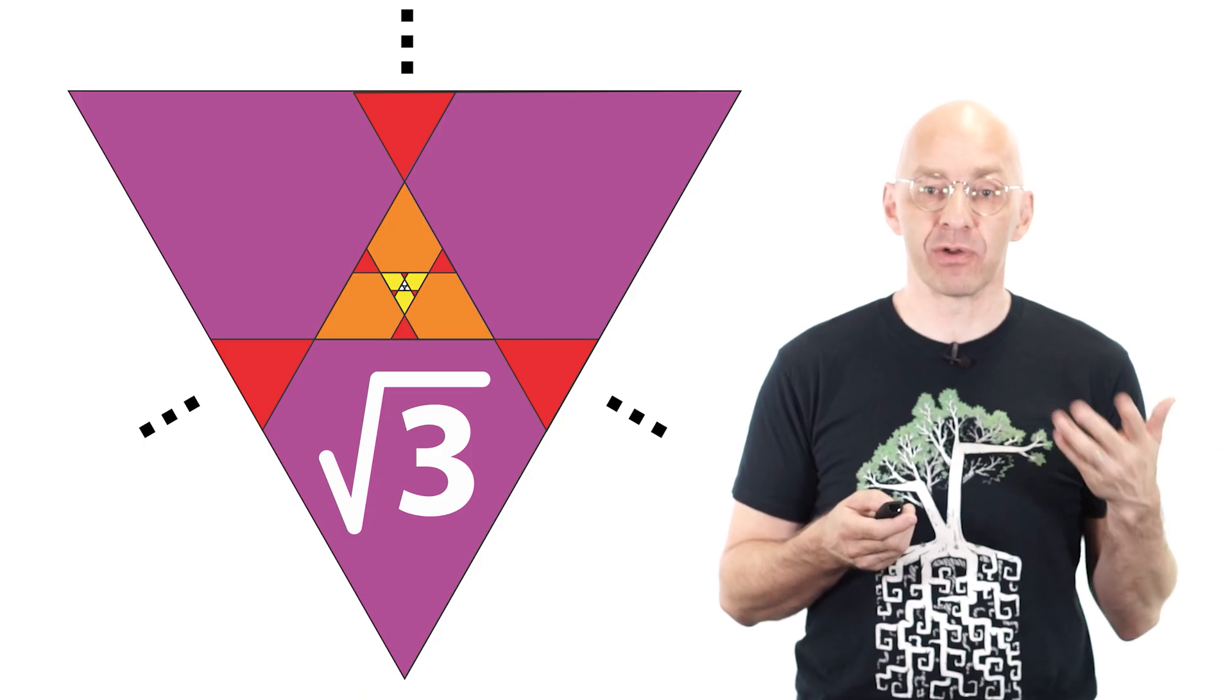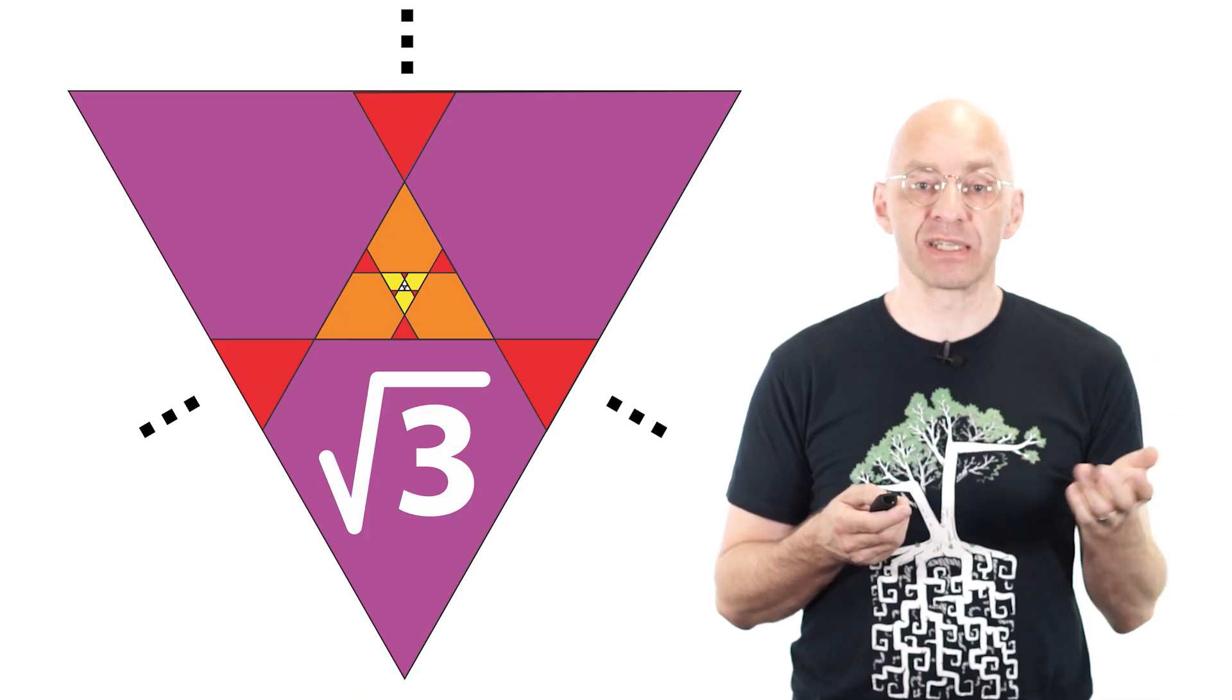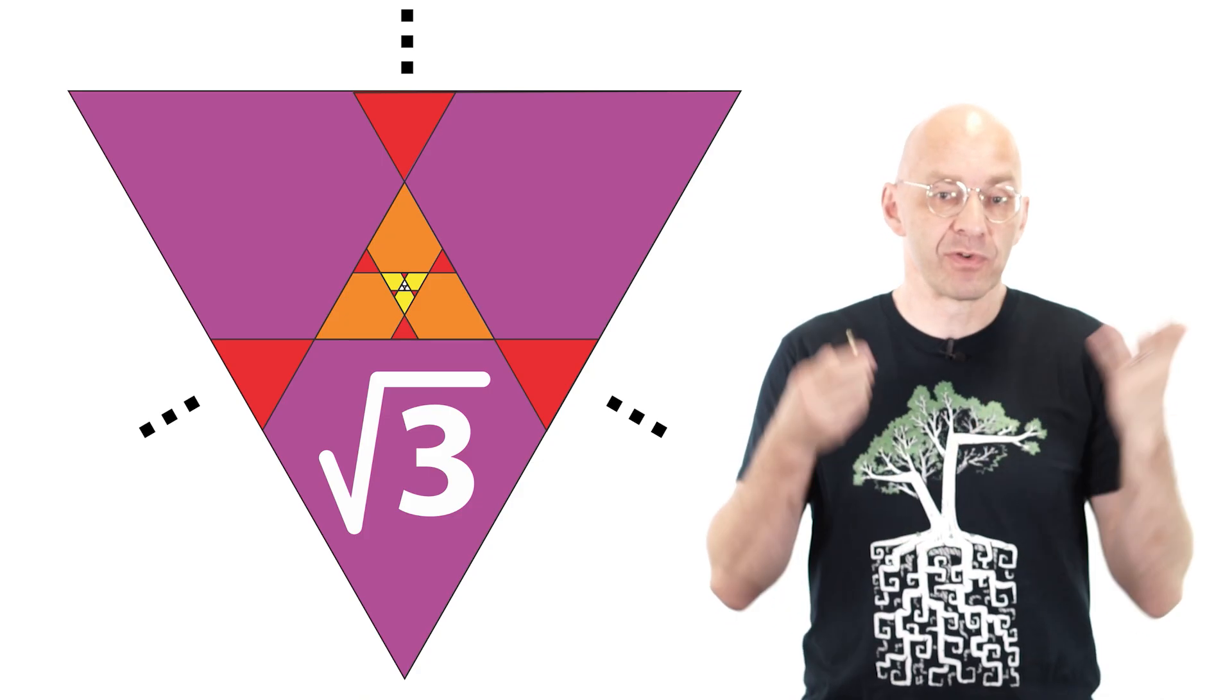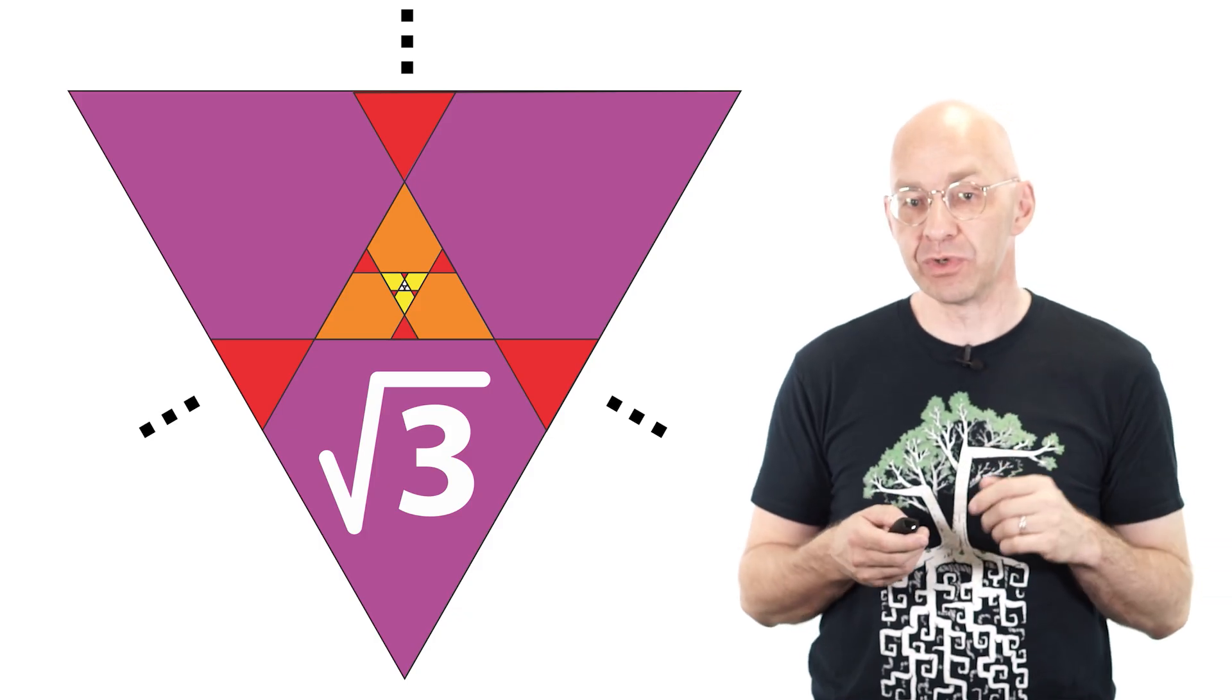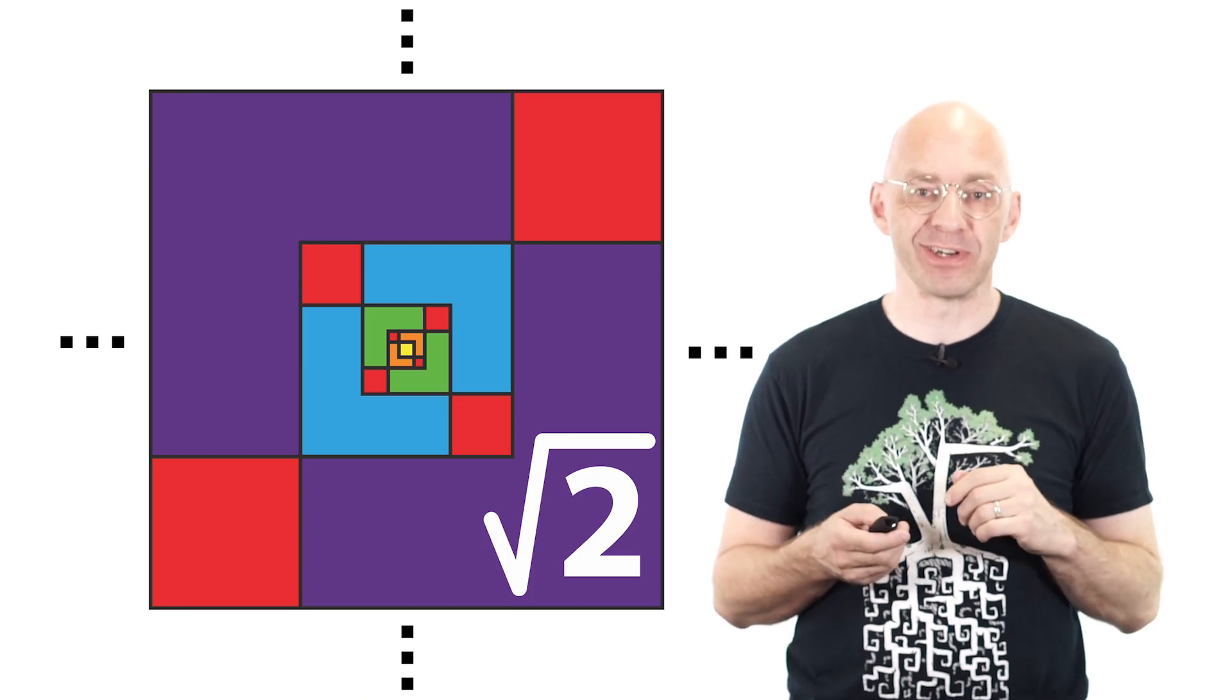And as you've probably already guessed, everything I just said about root 3 can also be shown to work for the root 2, root 5, and root 6 choreographies. Now just for fun, here is a picture of root 2 corresponding to the original Tannenbaum choreography. Also super pretty, right?